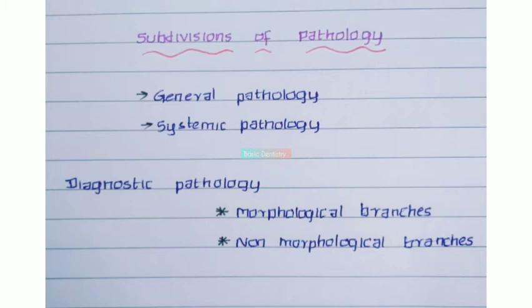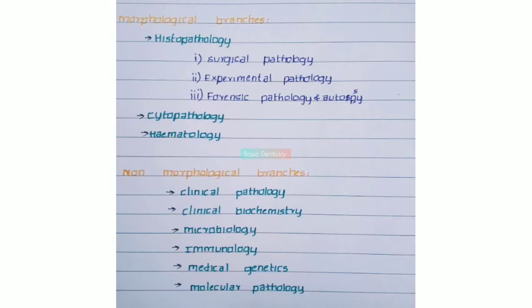There is another special type called diagnostic pathology, which has two major divisions. The first is the morphological branches. The morphological branches include histopathology, which covers surgical pathology, experimental pathology, forensic pathology, and autopsy.